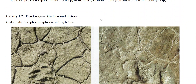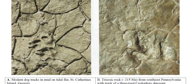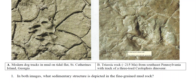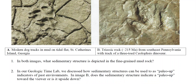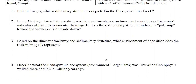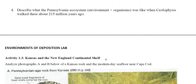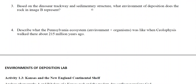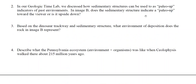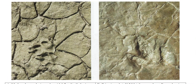For Activity 1.2 we're looking at trackways — a modern trackway with mud cracks, and then a fossil trackway that looks like Coelophysis, one of the first dinosaurs, which is Triassic — dinosaurs really started in the Triassic. Read about these and you can answer the questions pretty straightforwardly. For the last question about paleo-up direction, note that the mud cracks are filled, so think about whether this is upside down or right side up.